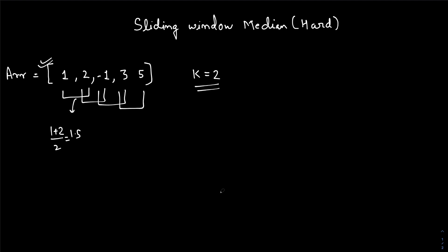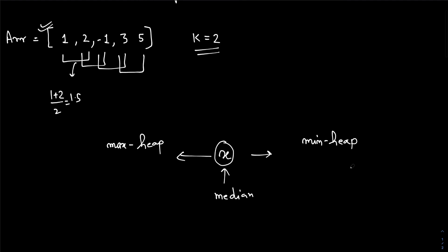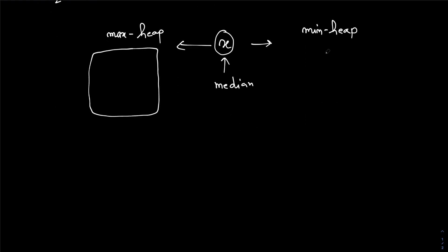First, we don't know what the median is, so I'm assuming that my median is X. Now I'm going to use a max heap and a minimum heap. If you guys are not aware of why I'm using max heap and minimum heap, please check out my previous video. This is my maximum heap and this is my minimum heap.